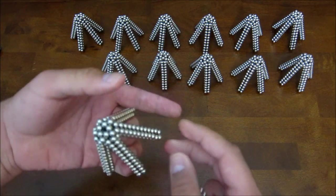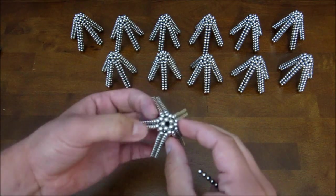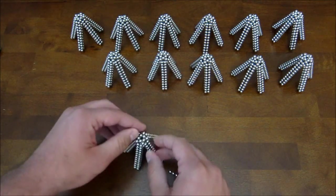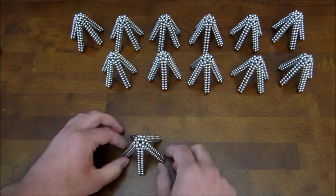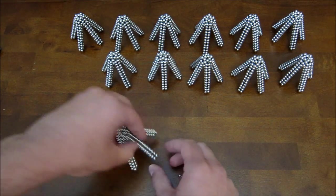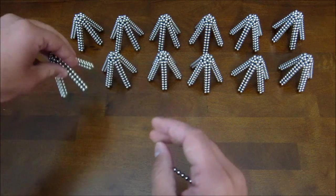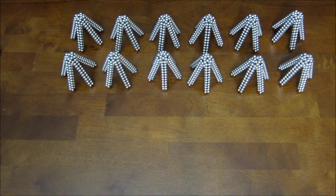And finish it off. The reason you want to do all that stuff to the tip is to strengthen it up. Because if you just left it with the decahedron on top, it's very weak and liable to fall apart. But this way it's not.